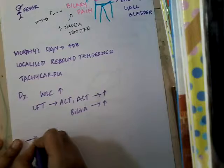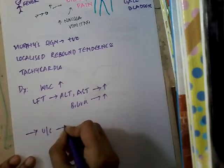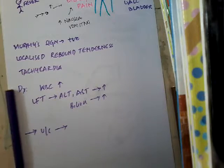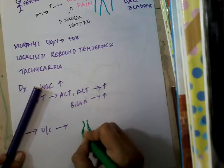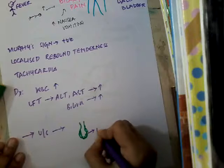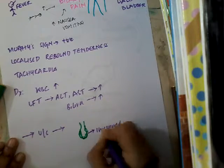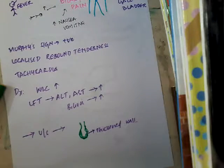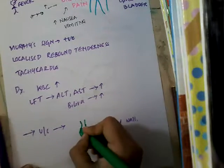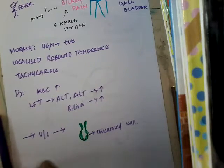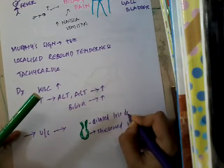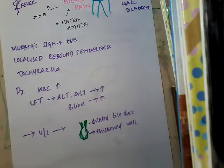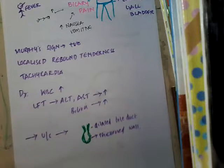On ultrasound examination, the gallbladder shows signs of inflammation with a thickened wall. You also see that the bile duct is dilated because of stasis of bile. These are the findings on ultrasound. This is how you diagnose calculous cholecystitis.